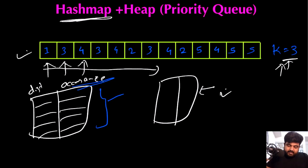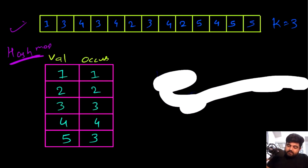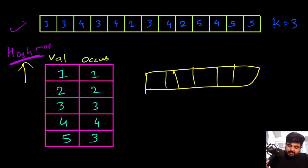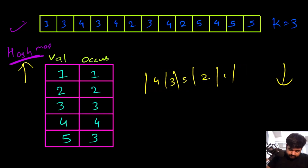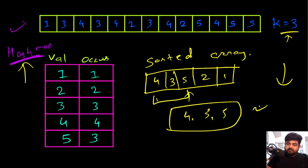So first let me quickly create a hash map for this given input which contains the distinct values and their occurrences. Now we need to select the top 3 elements. One approach is to take all the distinct values in this hash map, create a sorted array sorted in descending order of occurrence, most occurring value first, and then simply return the top 3 elements. So we can return the answer as 4, 3, and 5 easily — and this is the solution that would give us the correct answer.